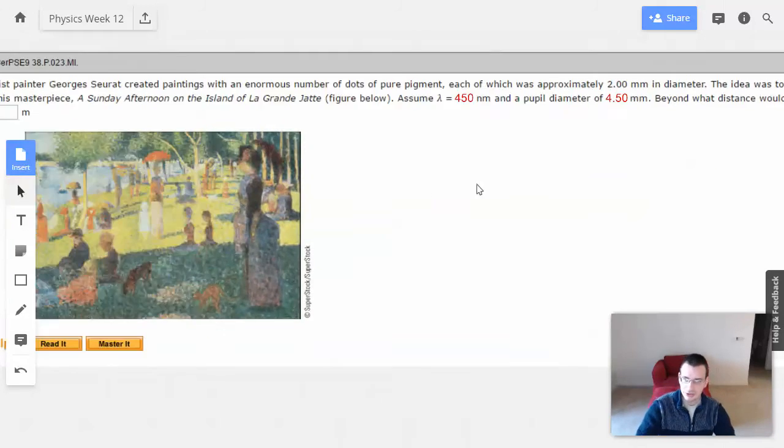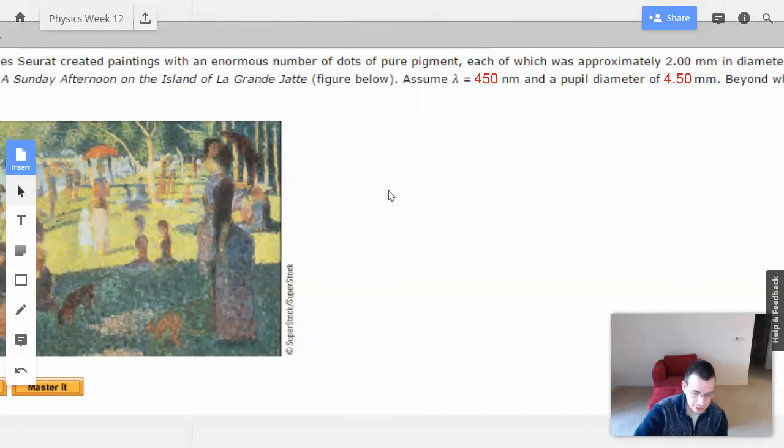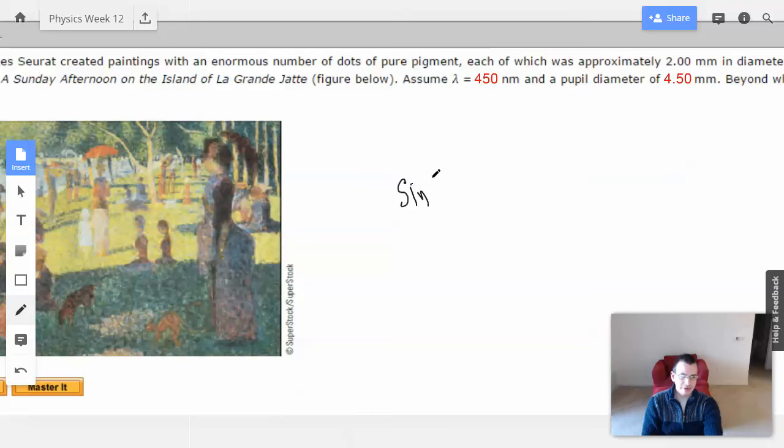I think this is referred to as the Rayleigh limit, and it's kind of subjective. The idea here is we have part of our formula: sine of theta equals lambda. Or actually, it starts off as tangent of theta, which becomes sine of theta, which is approximately theta, which is Y over D, where Y is the distance from the central to the minimum.